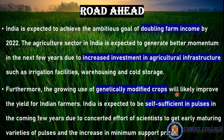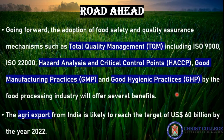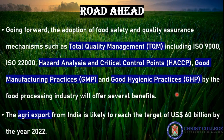Other targets include increasing investment in agriculture infrastructure, increasing the use of genetically modified crops, and becoming self-sufficient in pulses. The adoption of food safety and quality assurance mechanisms — such as Total Quality Management, Hazard Analysis and Critical Control Points, Good Manufacturing Practices, and Good Hygiene Practices — are also targeted. Agricultural exports are likely to reach US $60 billion by 2022. This has been a general overview of the agriculture sector in the Indian economy.